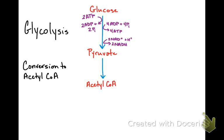Those pyruvates are converted into a molecule called acetyl-CoA in the next major step. It's a short step — you lose one of the three carbons as CO2, gain another NADH, and add a coenzyme A — which is why you get acetyl-coenzyme A, or acetyl-CoA for short. Coenzyme A helps transport the pyruvate into the mitochondrion, where it can go through the citric acid cycle.